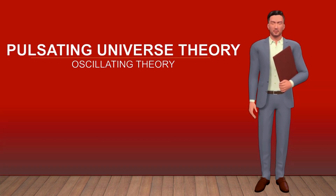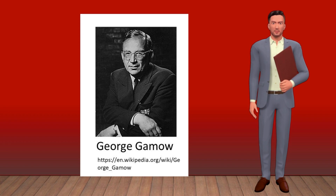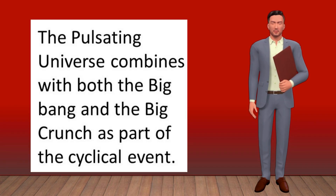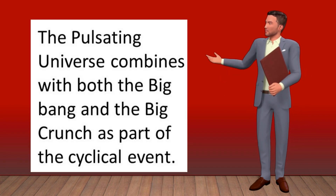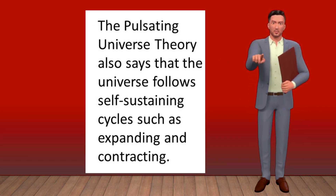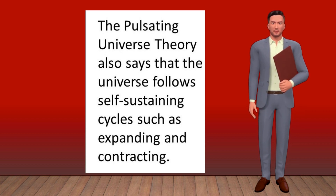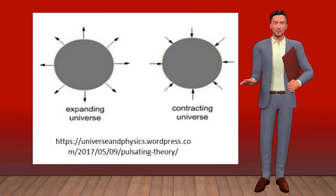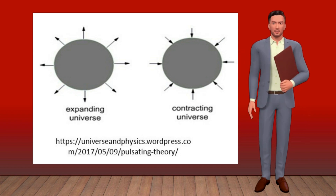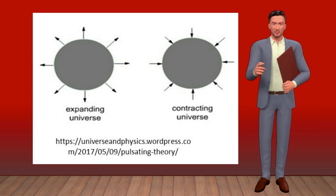The Pulsating Universe Theory, also known as the Oscillating Theory, was proposed by Russian-born US cosmologist George Gamow. The pulsating universe combines both the Big Bang and the Big Crunch as part of a cyclical event. The theory says the universe follows self-sustaining cycles of expanding and contracting. After the universe has contracted to a certain size, explosions occur and the universe starts expanding again. The universe expands at a rapid rate with gravity and inertia; eventually inertia runs out, gravity takes over, and causes the universe to pull into itself and create a crunch.